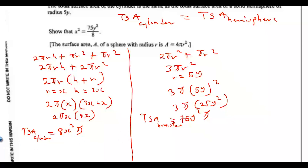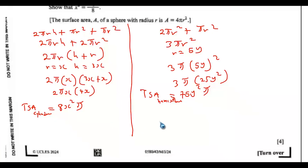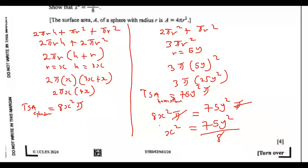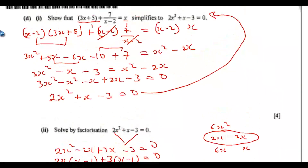Setting the two surface areas equal: 8πx² = 75πy². The π cancels on both sides. Dividing both sides by 8: x² = 75y²/8. This is the required solution and the end of question 5. In the next video, question 6 will be solved.